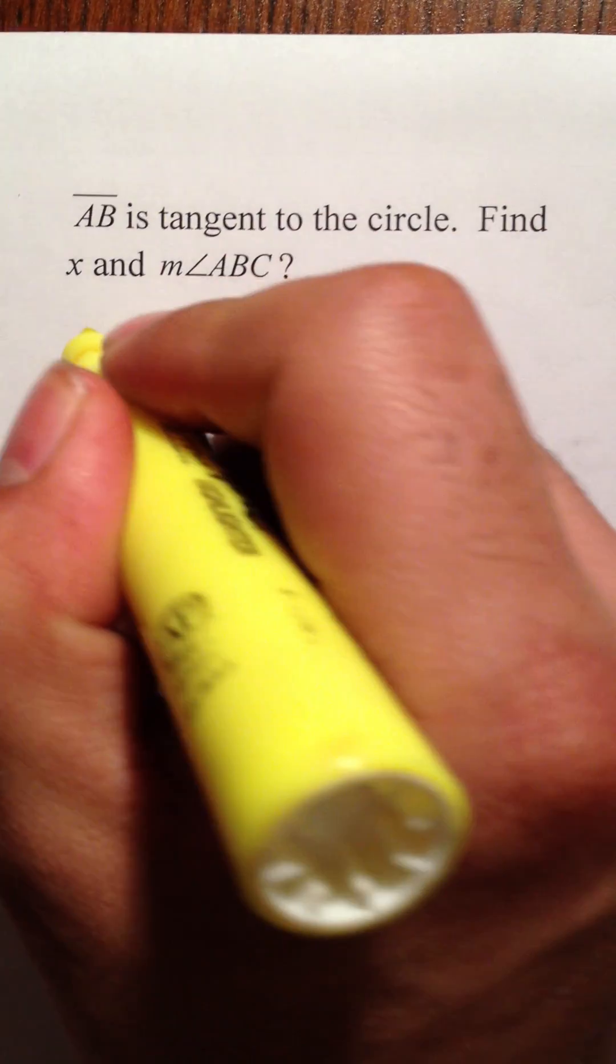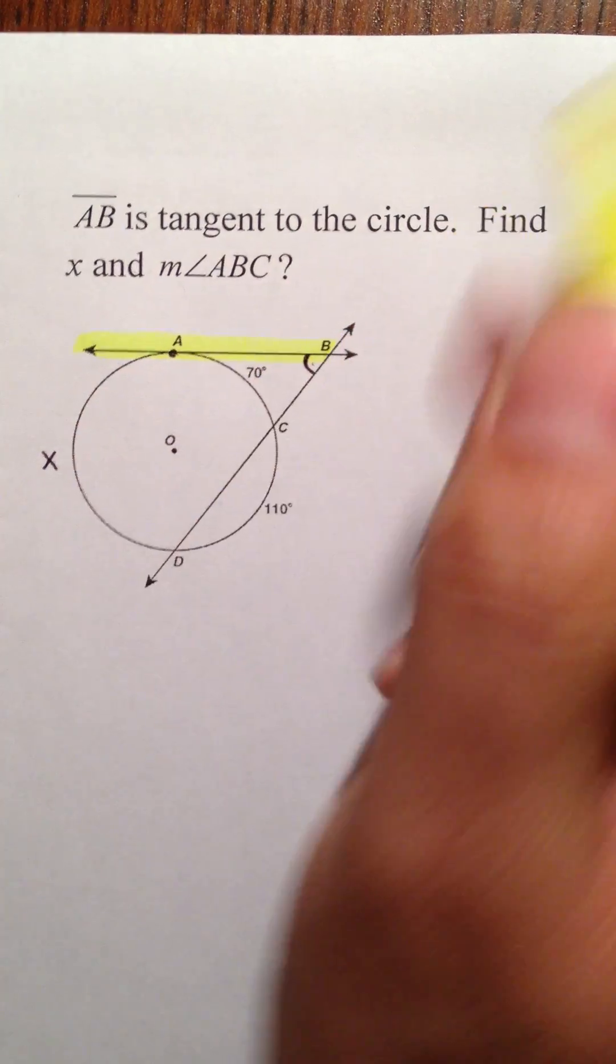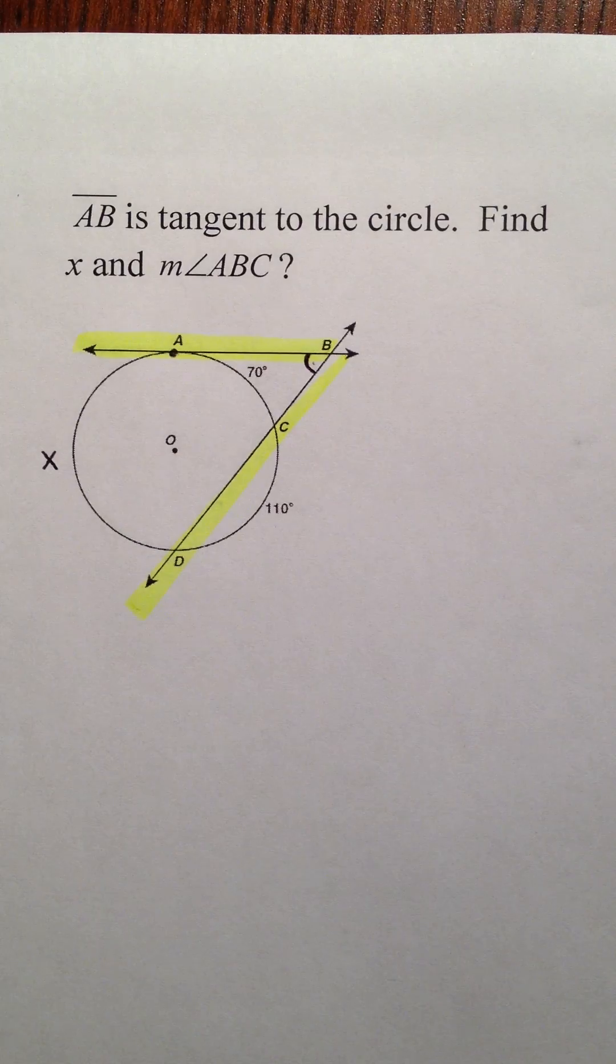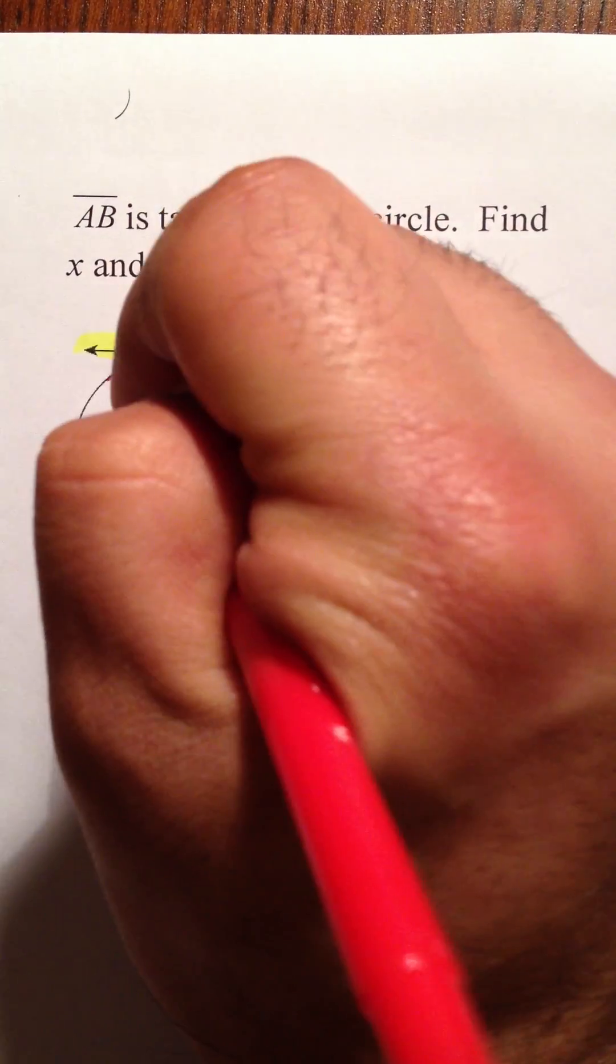I think it's easier to see angle ABC creates those rays, and these are the two arcs that are inside of it.